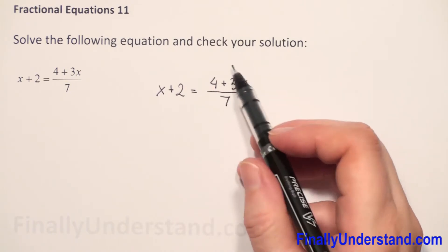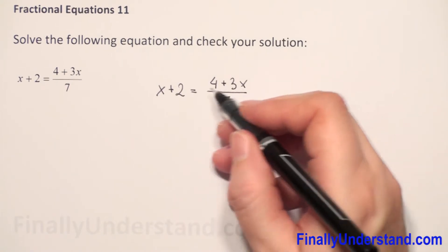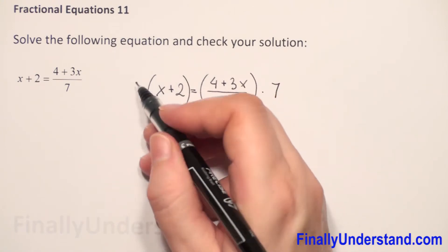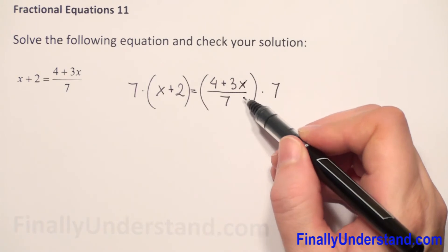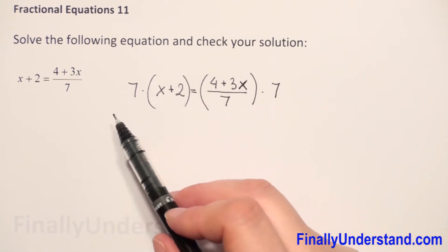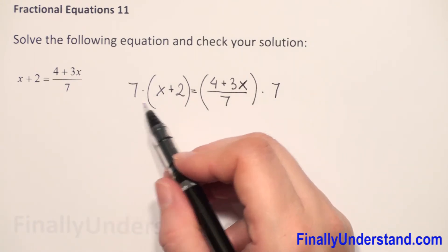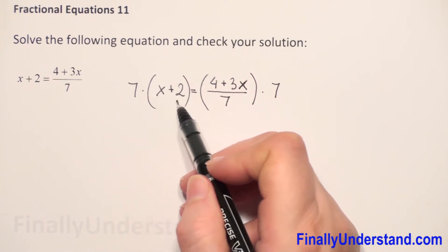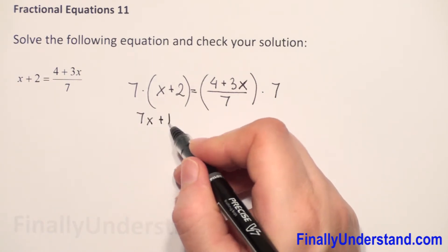When we multiply both sides by 7, this 7 we can reduce. So this whole expression we will multiply by 7, and the right side we have to multiply also by the same number. We cannot do it on only one side — whatever we do on one side we have to do the same operation on the other side. So 7 times x is 7x, and 7 times 2 is 14.